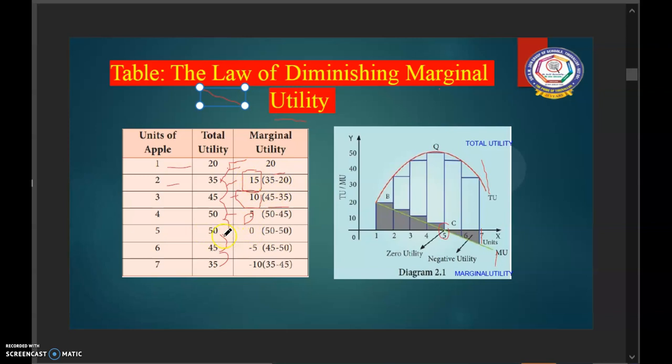So, after consuming fifth apple, at one stage, it becomes 0. At one stage, it will go negative. So, I told you about drinking water. After a certain level, you don't want to take water continuously. So, it will go to negative. In this graphical representation of this tabular column, you can see.